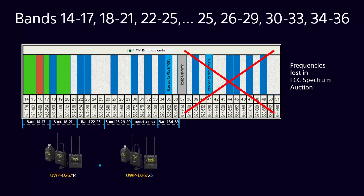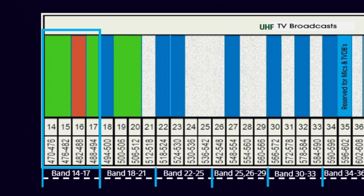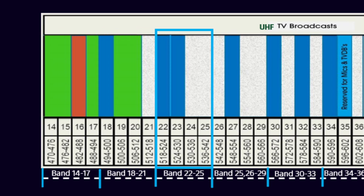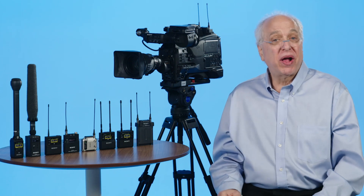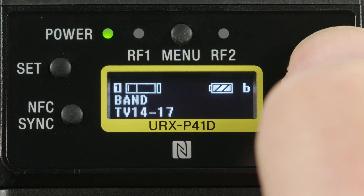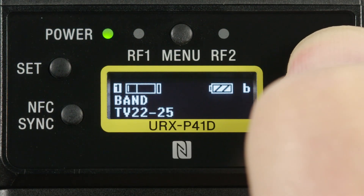We then split that large range into further thirds — for example, in the 14-block model: channels 14 to 17, 18 to 21, and 22 to 25. This helps with doing quick clear channel scans, and you can change between these frequency bands via the menus in the units.